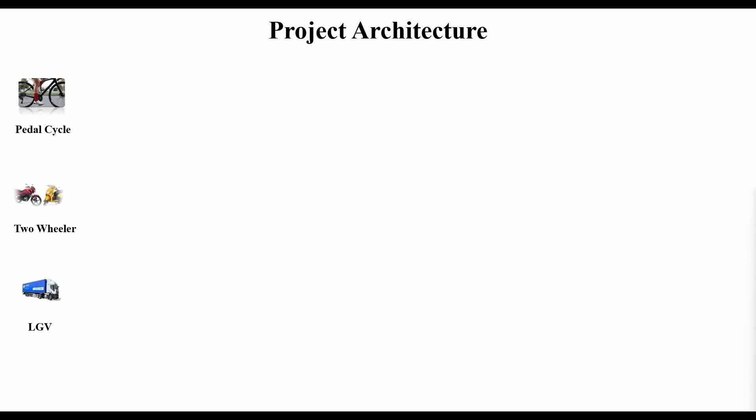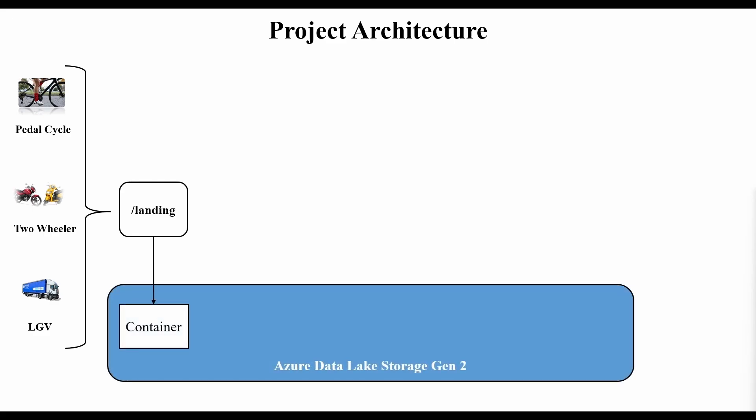Let us now see about the project architecture that we will implement in this course, so that you can get a better idea of what you are going to implement and what exactly you are going to work on. In this course, we will implement an end-to-end Databricks project using the Batch Processing solution. Let's understand our project architecture first so you can make sense of this better. In this, we will have the traffic and roads datasets, which is the case study for our project. These will be loaded into the landing zone, which is a container in the Azure Data Lake. In a typical project,